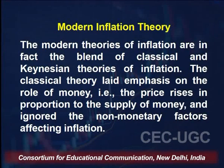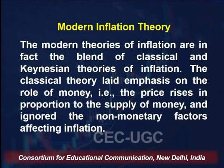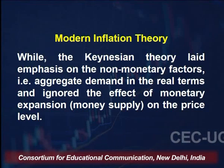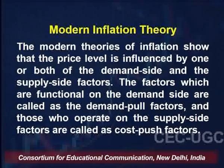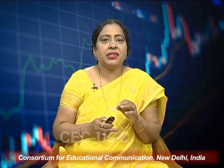The modern theories of inflation are in fact a blend of classical and Keynesian theories of inflation. The classical theory laid emphasis on the role of money — that is, prices rise in proportion to the supply of money — and ignored non-monetary factors. The Keynesian theory laid emphasis on non-monetary factors, that is, aggregate demand in real terms, and ignored the effect of monetary expansion on the price level. The modern theories show that the price level is influenced by both demand-side and supply-side factors — demand-pull and cost-push factors respectively.